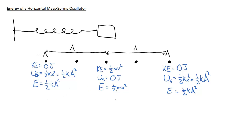We also know that at the equilibrium position, the total energy is one-half mv squared. So if we knew the maximum displacement of our mass and the spring constant, we could figure out the total energy at the end points and then use that to figure out the velocity of the mass at the equilibrium position.